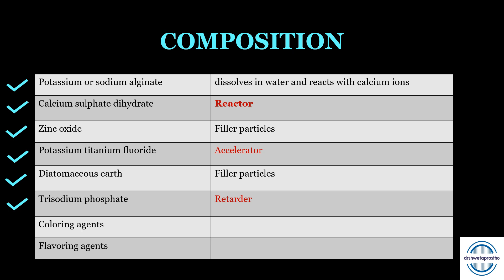Trisodium phosphate is the retarder — a very common multiple choice and viva question. It mainly controls the setting time to produce either regular or fast-set alginate. Coloring and flavoring agents are also added, with different flavors like peppermint, anise, mango, and orange to make it more comfortable for the patient.